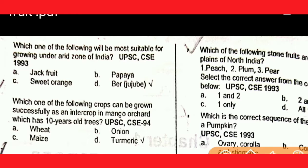Question number one: which one of the following will be suitable for growing under arid zone? The answer is ber (jujube).